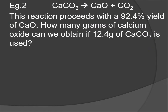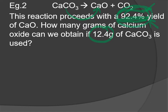In this example, calcium carbonate decomposes to produce calcium oxide and carbon dioxide — making quicklime by heating calcium carbonate. This is a slightly different version where we're given the percent yield to start. If you've done this reaction many times and find you only get a 92.4% yield each time, you can predict how many grams of product you'll obtain when running the reaction with 12.4 grams of reactant.